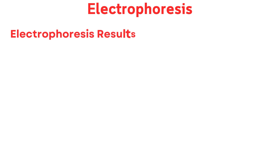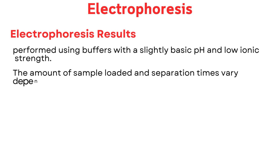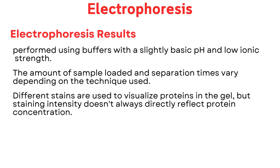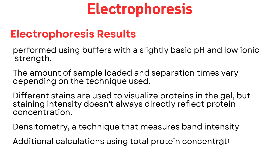Electrophoresis results: a snapshot in time. Results are typically visualized as a banding pattern on a gel. The analysis is usually performed using buffers with a slightly basic pH and low ionic strength. The amount of sample loaded and separation times vary depending on the technique used. Different stains are used to visualize proteins, but staining intensity doesn't always directly reflect protein concentration. Densitometry, a technique that measures band intensity, provides relative proportions of different proteins rather than absolute amounts, and additional calculations using total protein concentration may be needed for precise quantification.